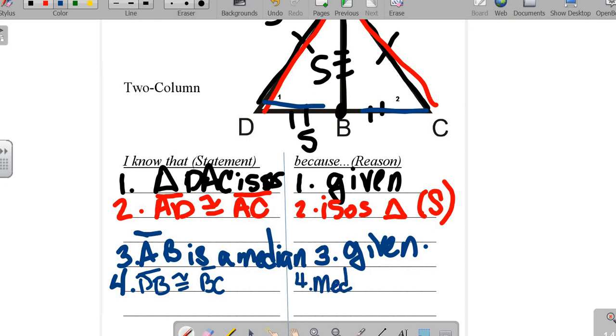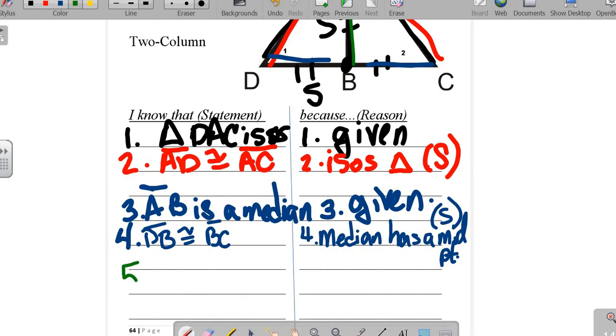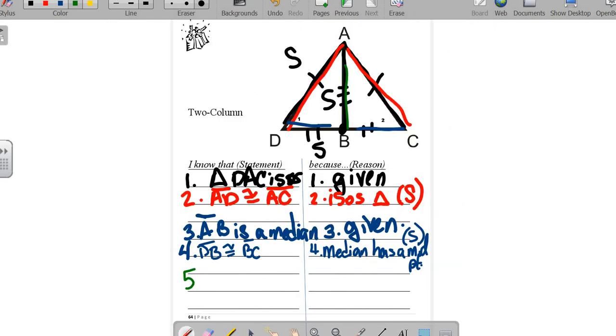Because a median has a midpoint, it's definition of a median. There is our second side. Last but not least, we have this reflexive side down the middle. This is the way you write it, it's going to look a little strange. You write AB is congruent to AB and the reason is reflexive. There is our third side.